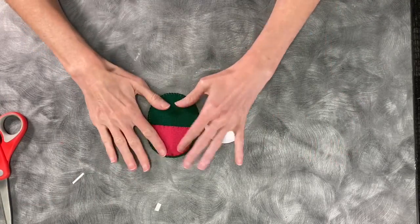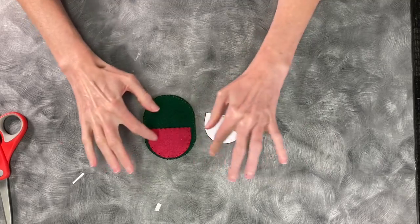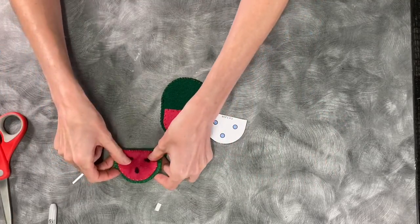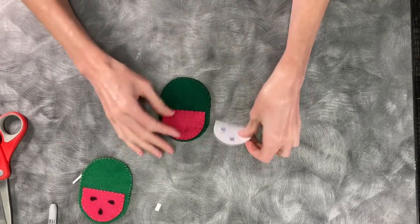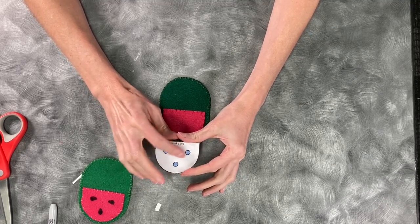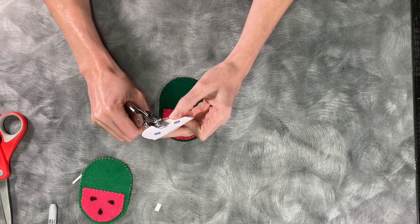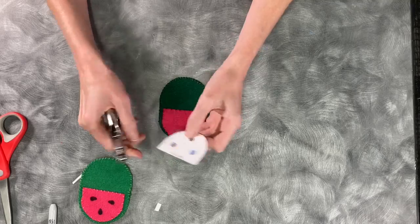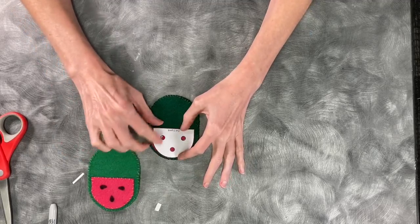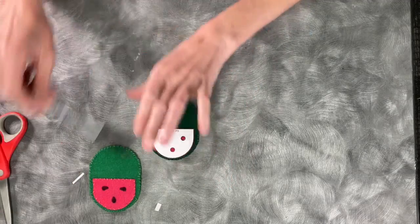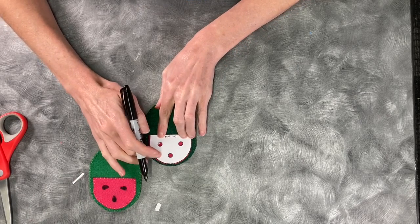So before we put on the Velcro, I want you to get the opportunity to draw your little seeds on here, your little watermelon seeds like this one. And the easier way to do it is to do it before the Velcro so that you can lay it flat. So the reason I have these little holes right here is for this. And it's your little pattern. So it's helpful for you to have them evenly spaced. So I'm going to grab the Sharpie marker, lay my pattern on top of the pink part.